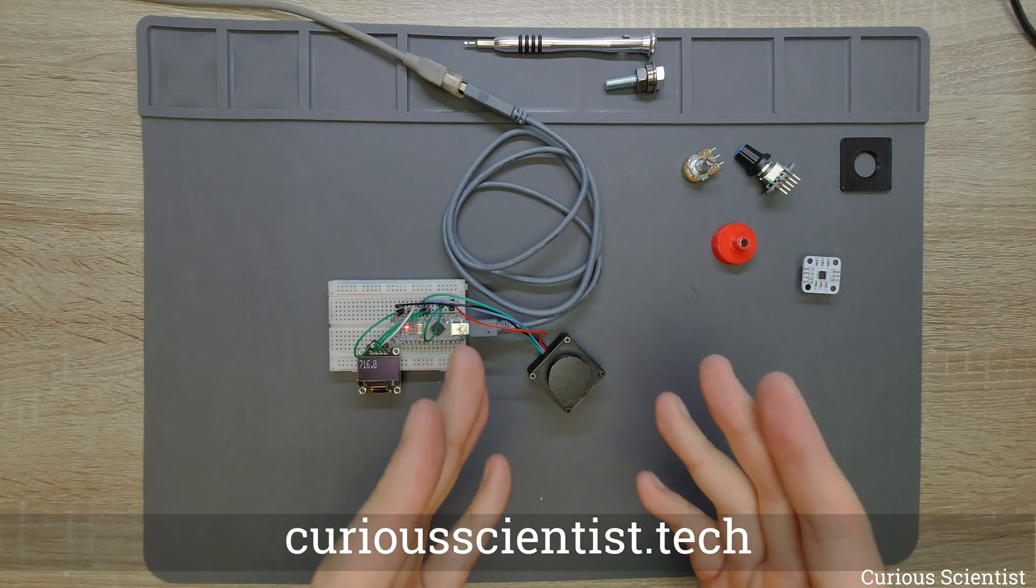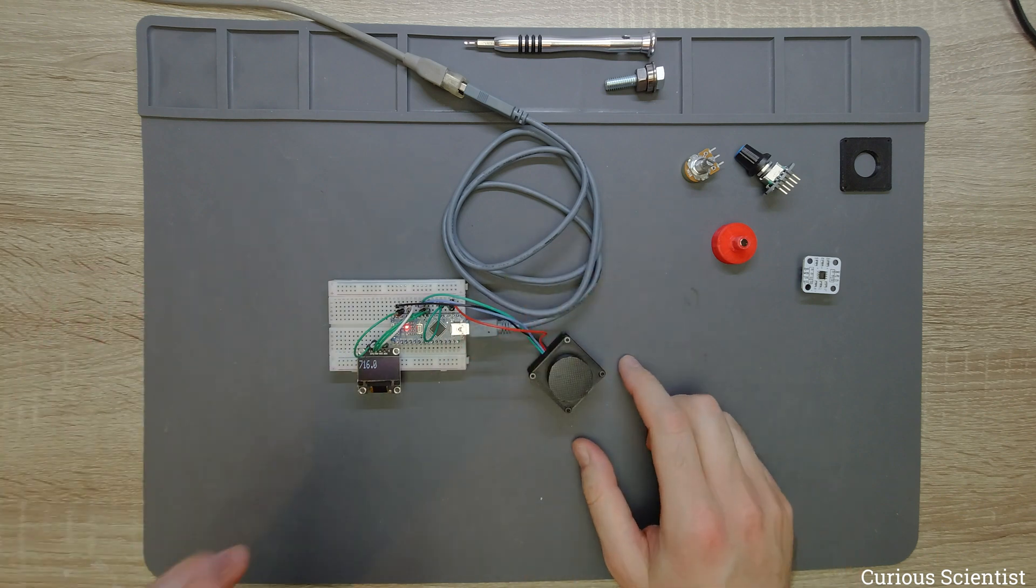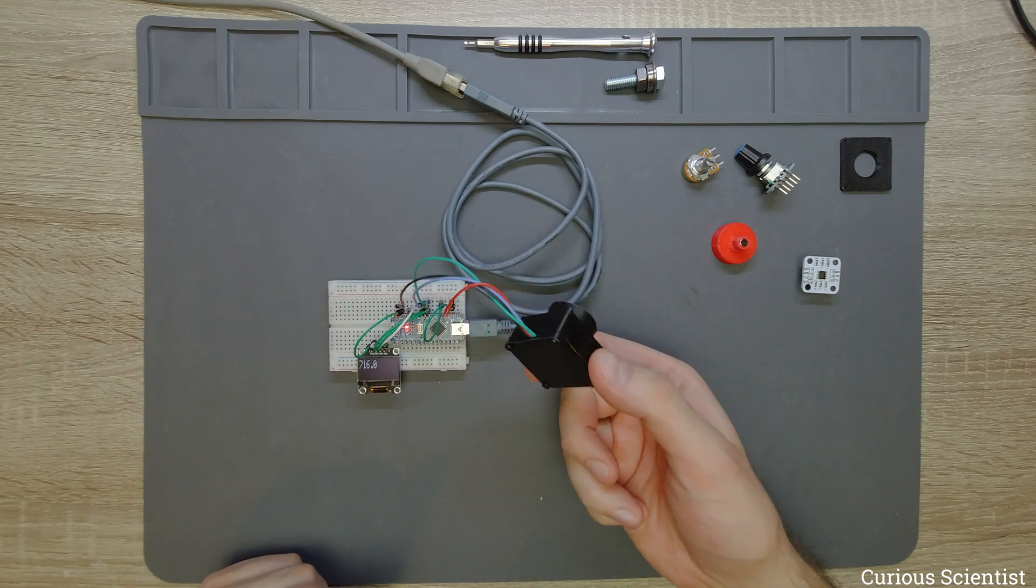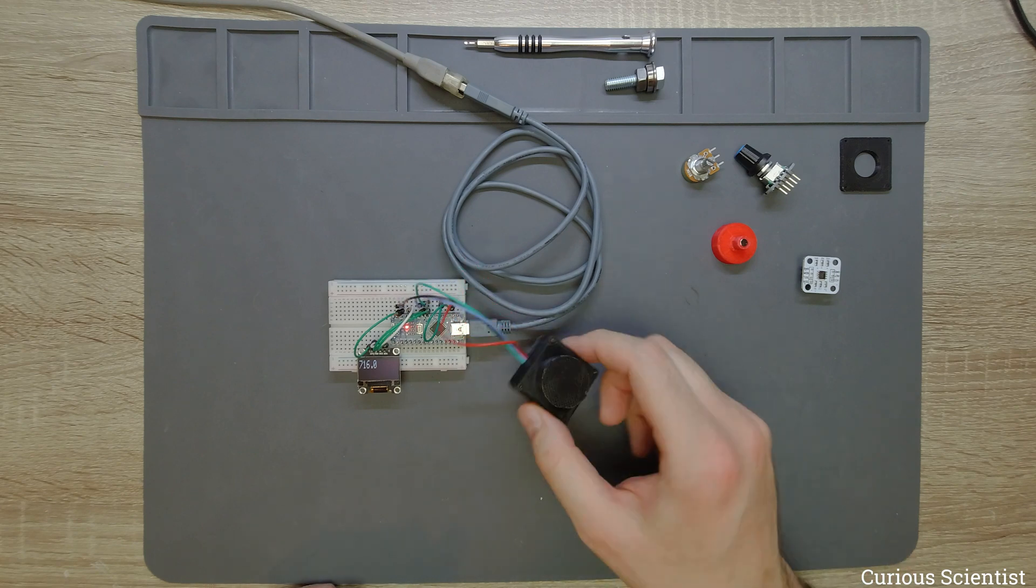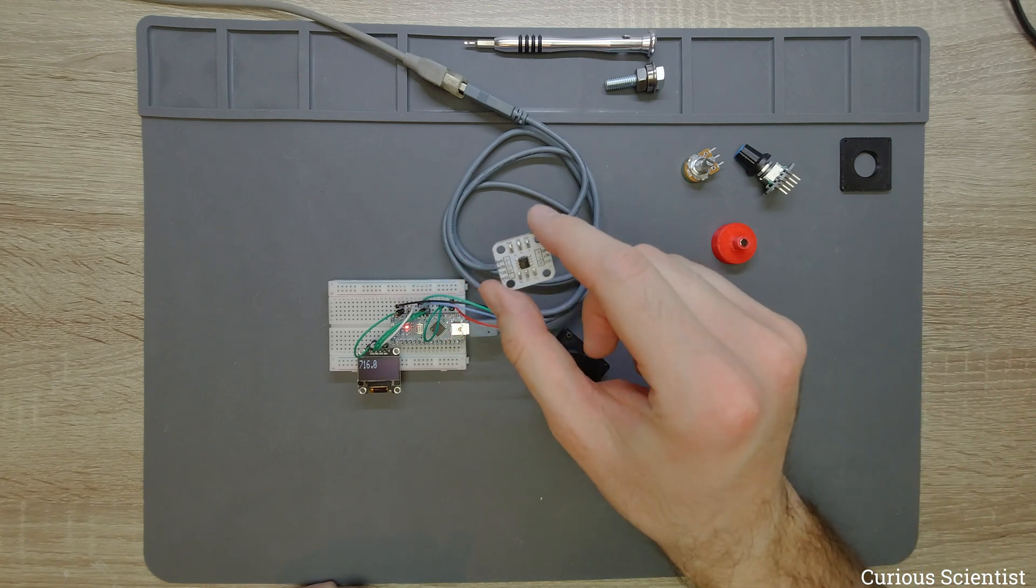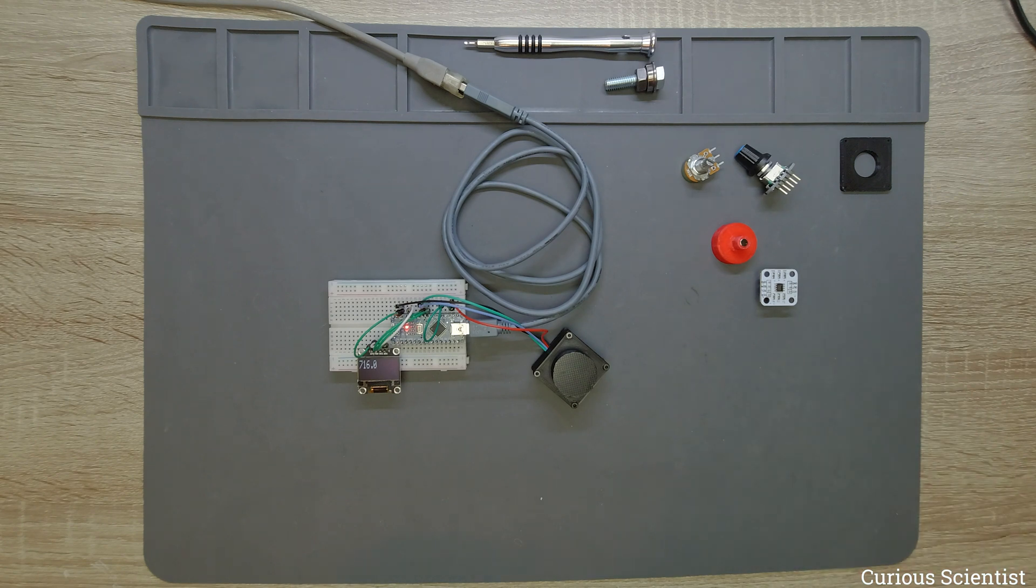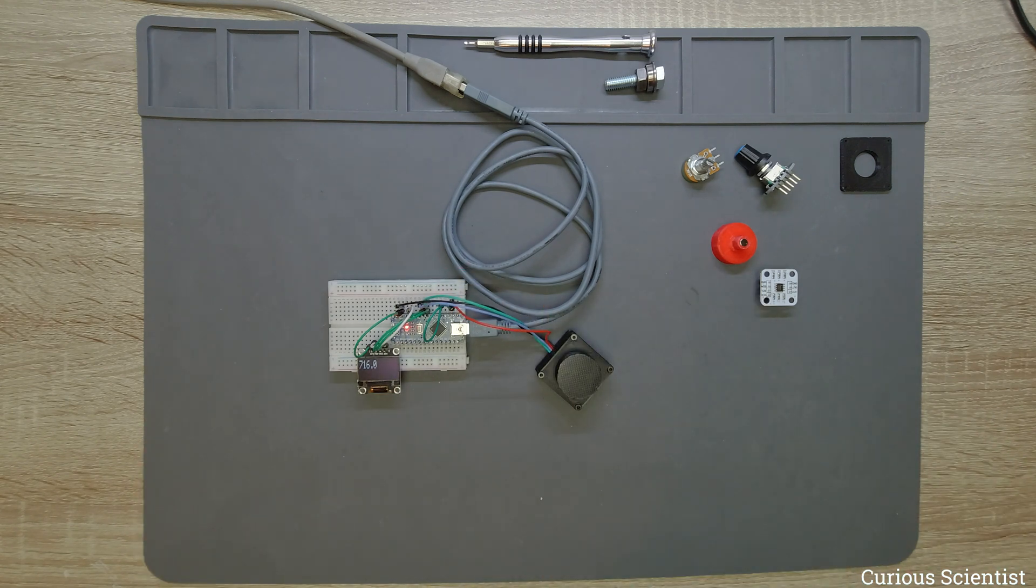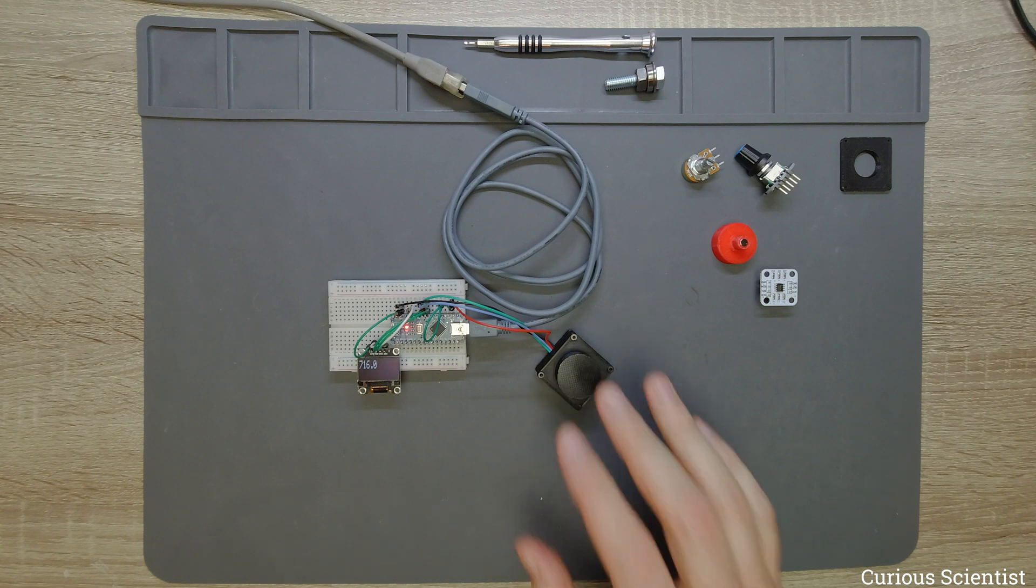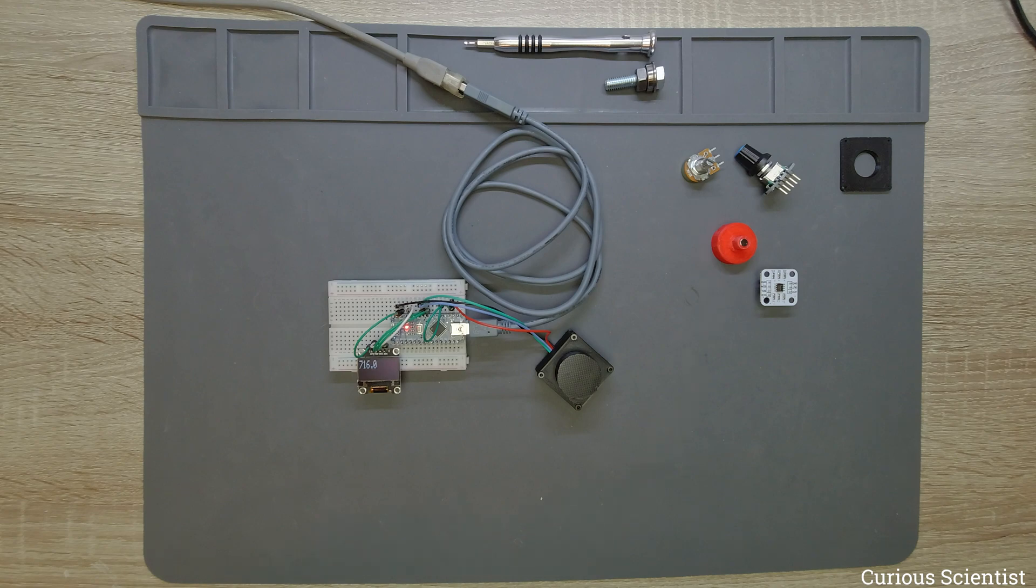So don't forget to check the description and then visit my website, curiousscientist.tech, because I have all the information for this. I will upload the code there again and I will also upload the drawings for this tiny box. So you can mount this kind of circuit board directly there. And you can also find some other useful things, hopefully useful things on my website. So I hope this video was useful to you. I hope you learned something and see you in the next video.